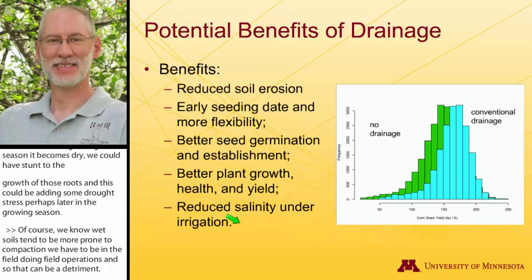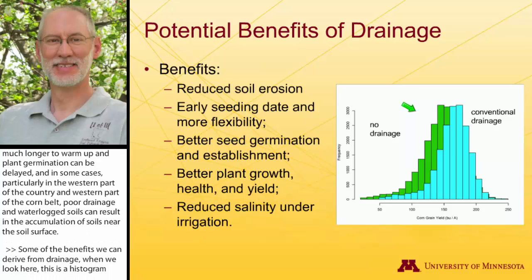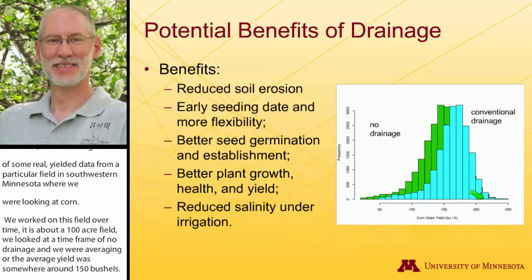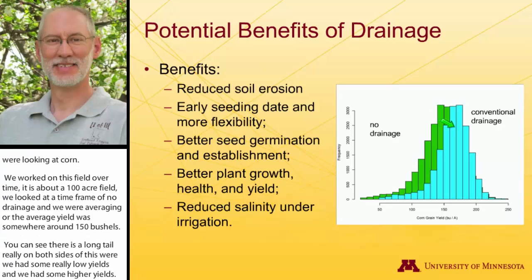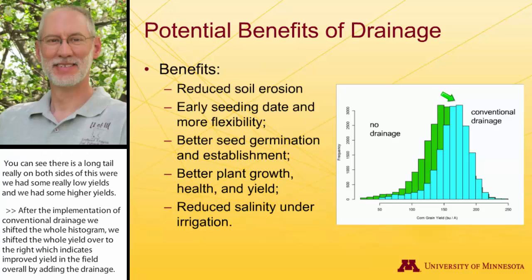Some of the benefits that we can derive from drainage — this is an actual histogram of real yield data from a particular field in southwestern Minnesota where we were looking at corn. We worked on this field over time; it's about a 100-acre field. We looked at a period of no drainage, and our average yield was somewhere around 150 bushels, with a long tail on both sides — some very low yields and some higher yields. After the implementation of conventional drainage, we shifted that whole histogram to the right, improving yield overall. Our average yield moved up from about 150 to 175 bushels — a real result of the benefit of drainage.